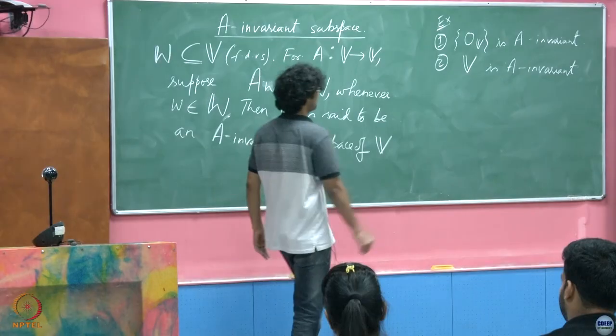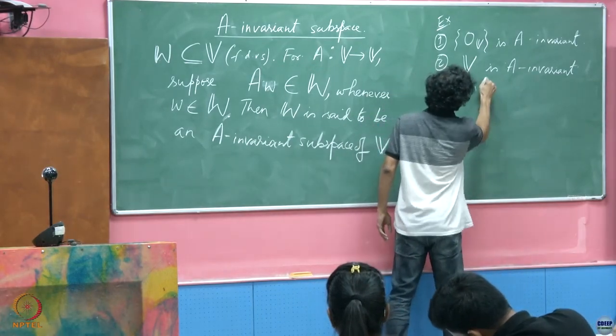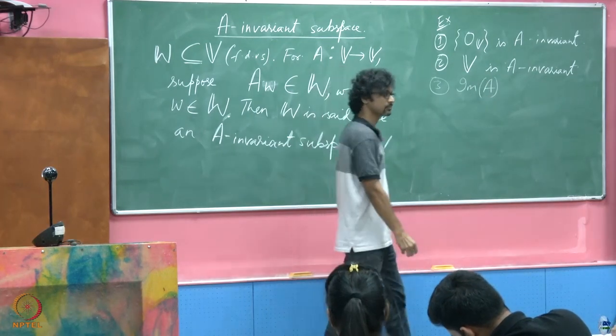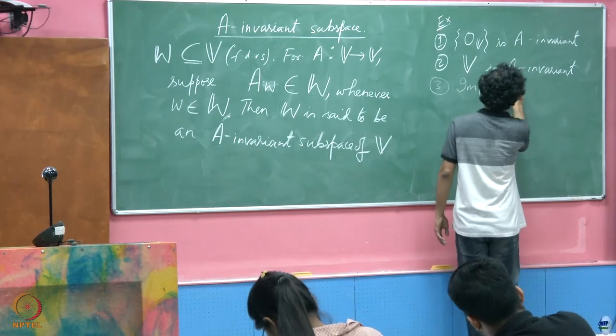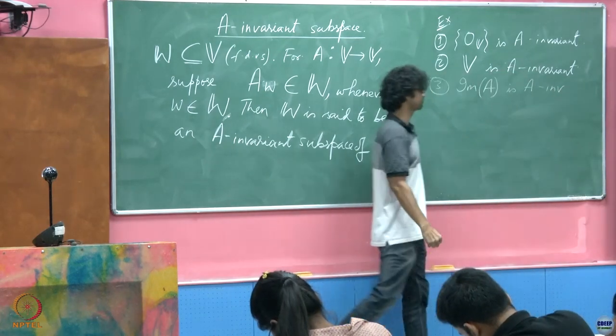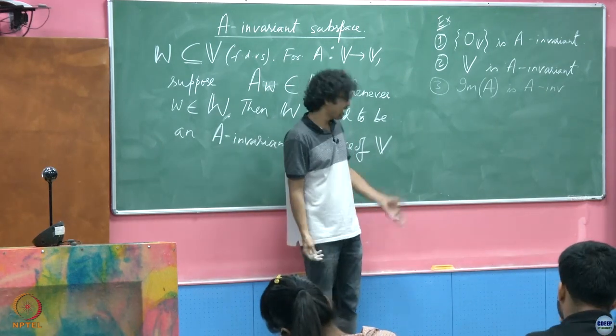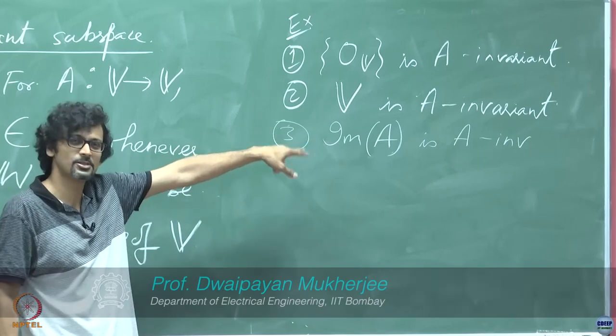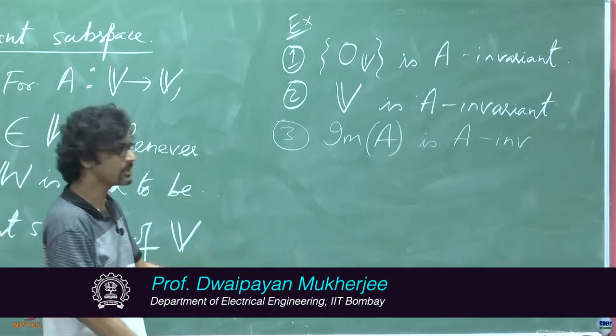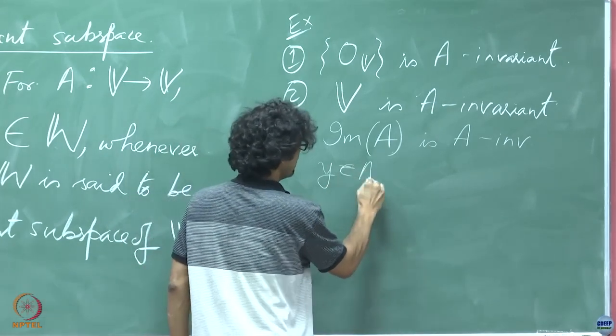Okay, third: image of A is A-invariant, is it not? Just checking. Of course, I'm getting from the most trivial examples to slightly more interesting. I didn't say it was a very interesting example, but image of A means what? Any object that is in the image of A implies...